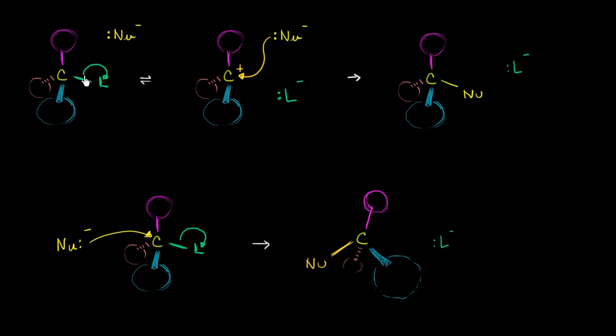Well, in this top one, we see that this leaving group leaves first and that this is the rate determining step. And then a nucleophile comes in here and attacks the carbocation and attaches. So this is a substitution reaction with the nucleophile, but the rate determining step involves only one of the reactants. The leaving group's got to leave. So this right over here is an SN1 reaction, only involving one of the reactants.